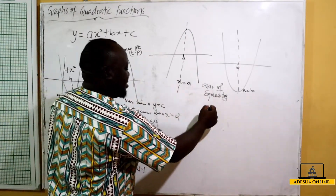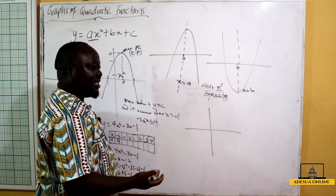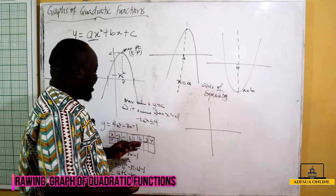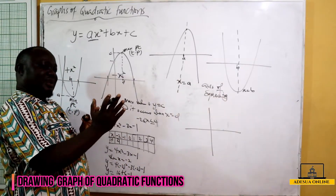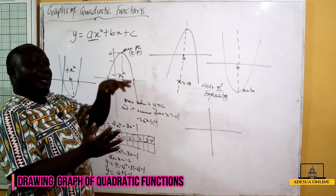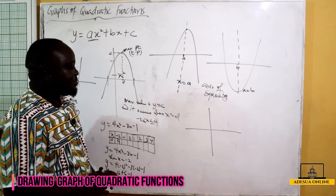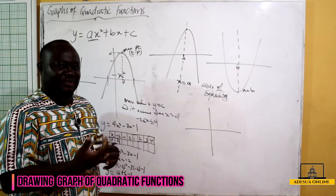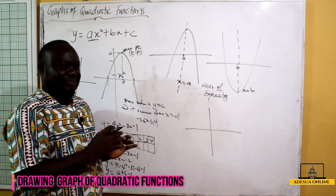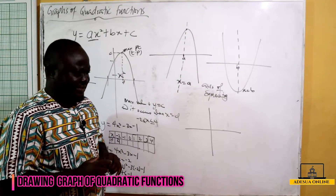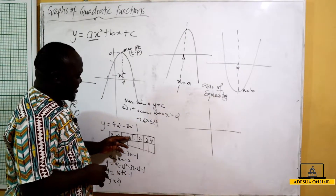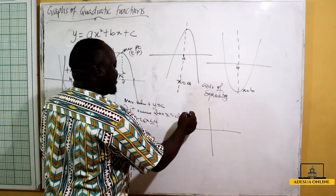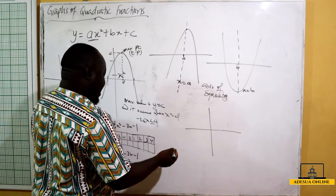Once you're done filling the table, you go to your OXY plane. You pick a reasonable scale — usually the scale will be given to you. Depending on the scale, you check your values and see whether to shift the graph left, right, upwards, or downwards. After computing y for x = -1, 0, 1, 2, 3, you mark all the points.